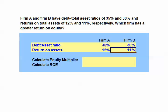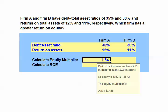We'll begin by calculating the equity multiplier for each firm. For Firm A, our debt to asset ratio of 35% means we have $0.35 in debt for every dollar in assets, and equity then would be $0.65 or 65%.